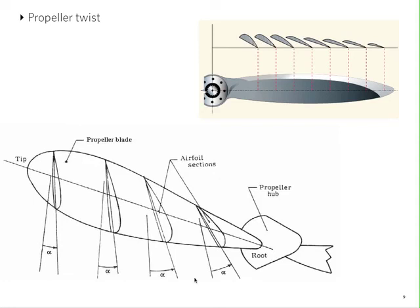In birds, in bats and insects, the flapping wings provide the dual function that in airplanes is provided by the wings and the propeller.